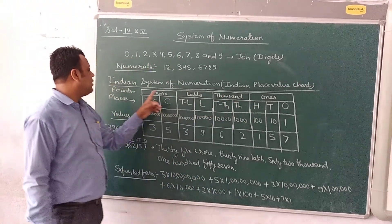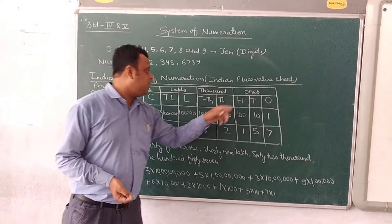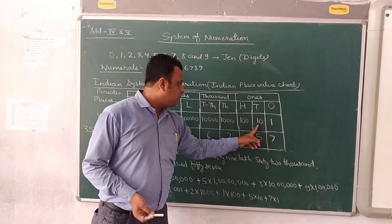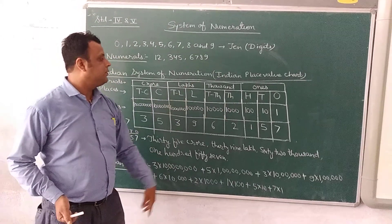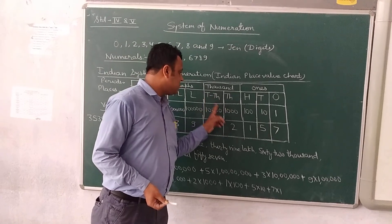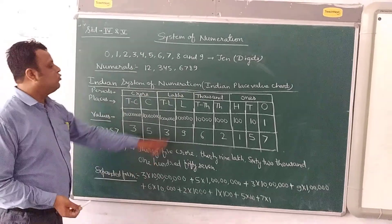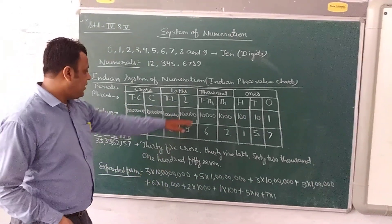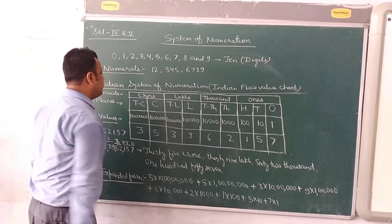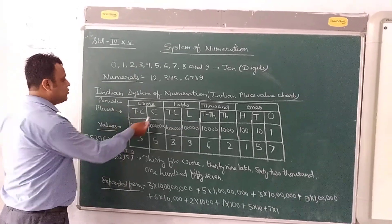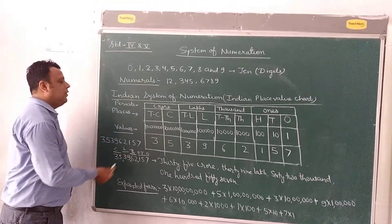We have four periods: ones, thousands, lakhs, and crores. Each period has different places. The period 'Ones' has three places — ones, tens, and hundreds — with values 1, 10, and 100 respectively. The period 'Thousands' has two places — thousand and ten thousand — with values 1,000 and 10,000. The period 'Lakhs' has two places — lakh and ten lakh — with values 1,00,000 and 10,00,000. And the last period is 'Crores,' with two places — crore and ten crore — with values 1,00,00,000 and 10,00,00,000.